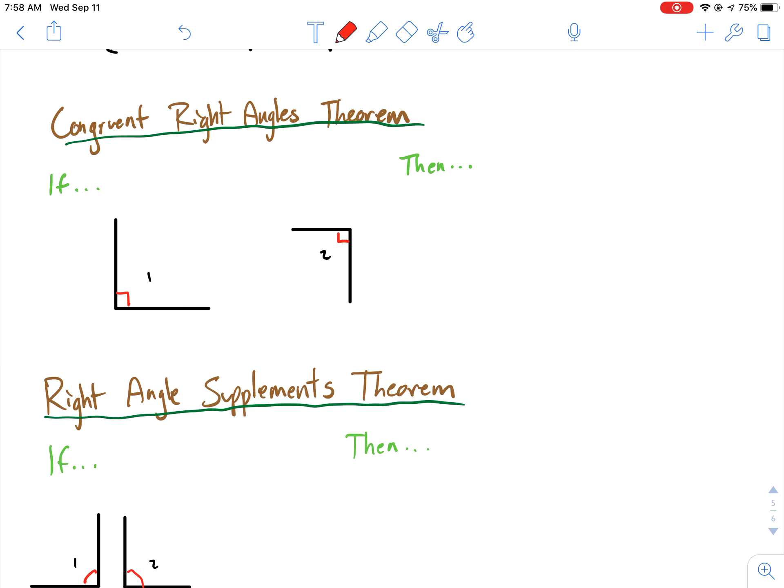Now, congruent right angles theorem. This also seems pretty obvious, but if angle 1 and angle 2 are right, they're both right angles, then what do you know? Angle 1 is congruent to angle 2.